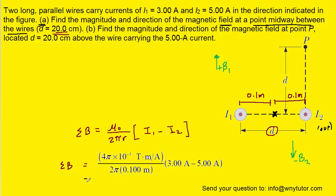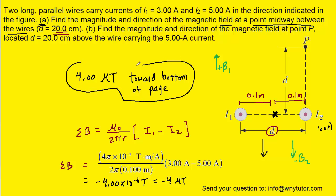When we calculate this, we get a value of approximately negative 4 times 10 to the minus 6 tesla, which is equivalent to negative 4 microtesla. The fact that it's negative means that overall, the magnetic field at this point is pointing downward. We can express our answer as 4 microtesla towards the bottom of the page. That completes part A of the question.